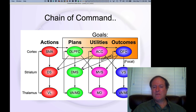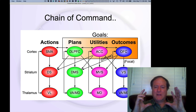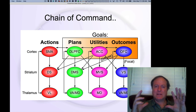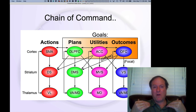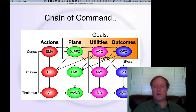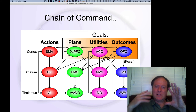Between the two — the ACC and the OFC — they give us a really good sense of, from an affective, motivational perspective, how likely this is to succeed, how good a plan is this, and how much it will give me something I want. Those are critical signals for evaluating a variety of possible plans of action. One idea is that you iterate through sequentially thinking of different things.